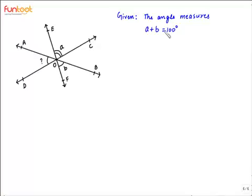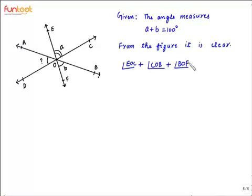Here, it is given that angle A plus B is equal to 100. From the figure, it is clear that angle EOC plus angle COB plus angle BOF is equal to 180 degrees.